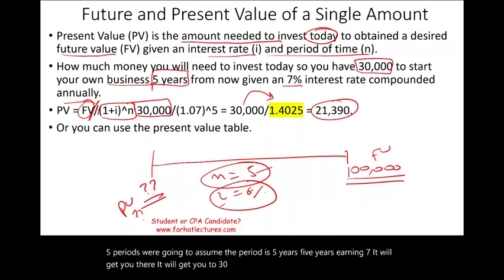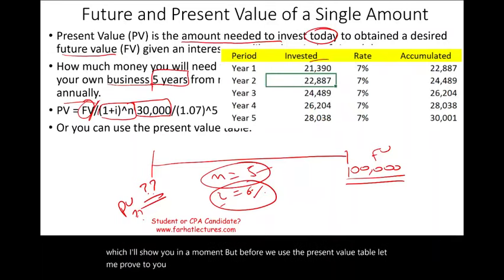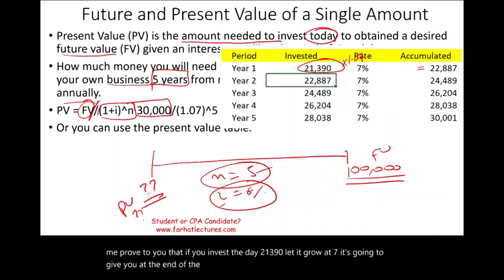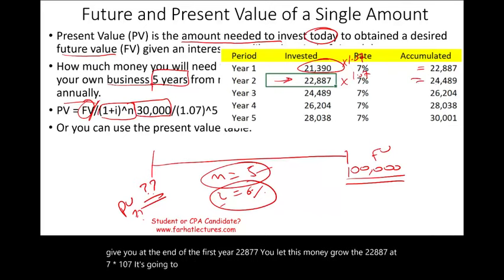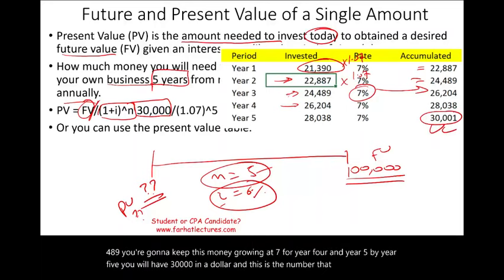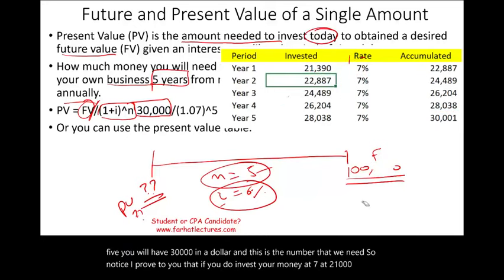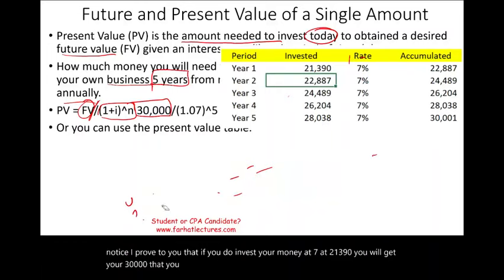Let me prove this: if you invest $21,390 today at 7%, after year one you have $22,877; growing at 7% gives $24,489 in year two. Continuing to grow at 7% through year four and year five, by year five you will have $30,000 — exactly the number you need to open your business.